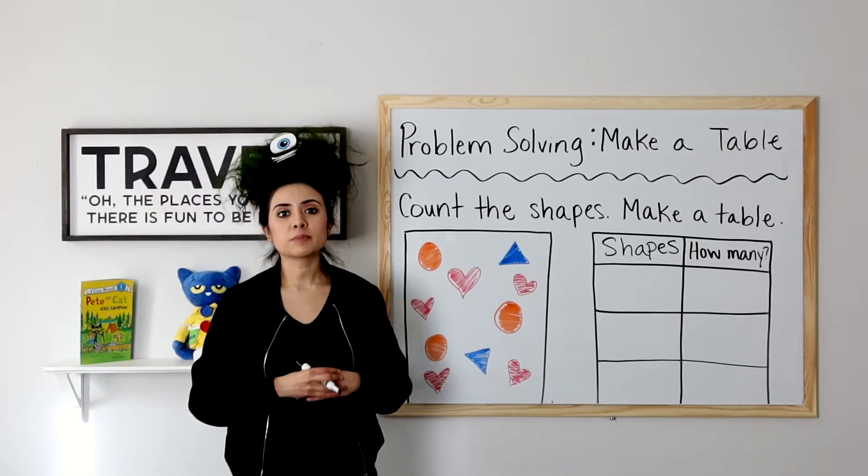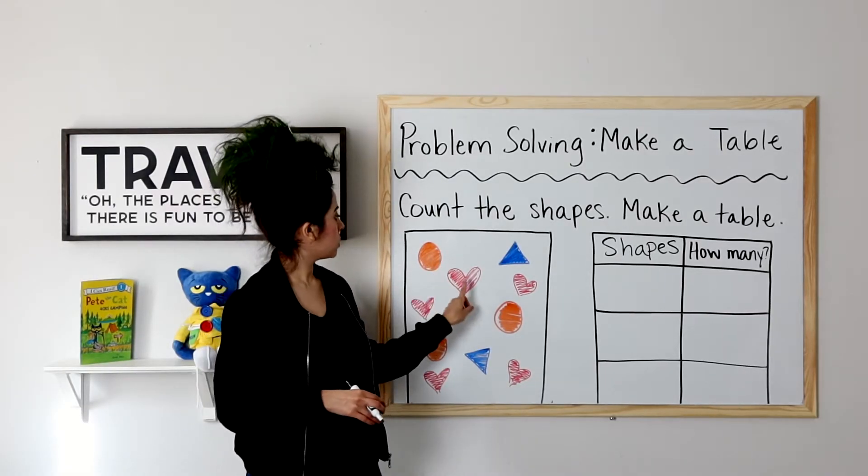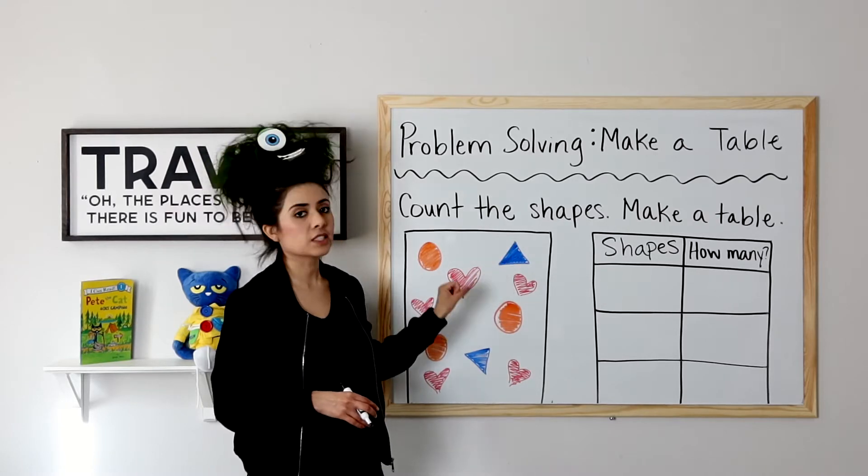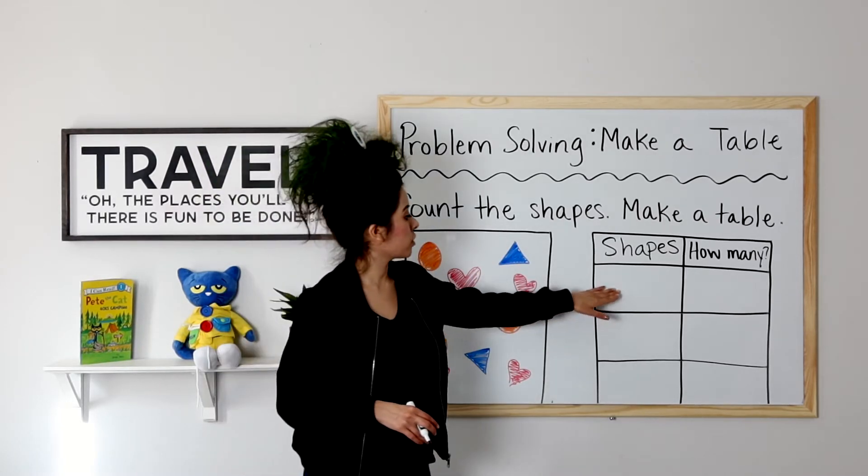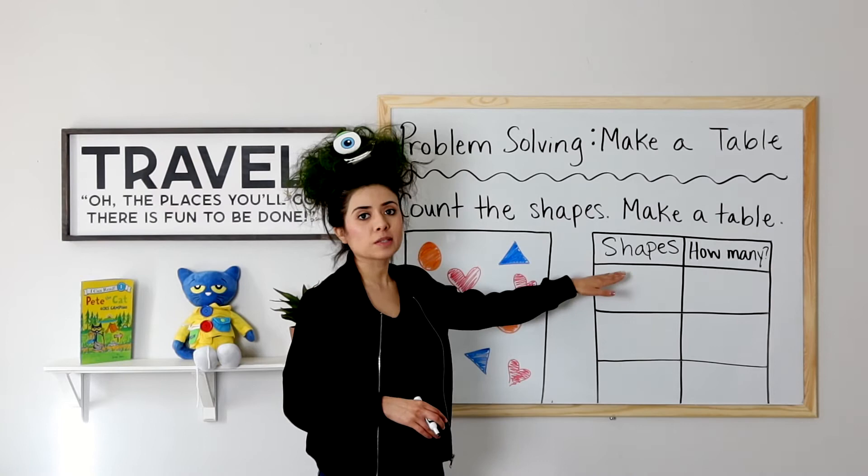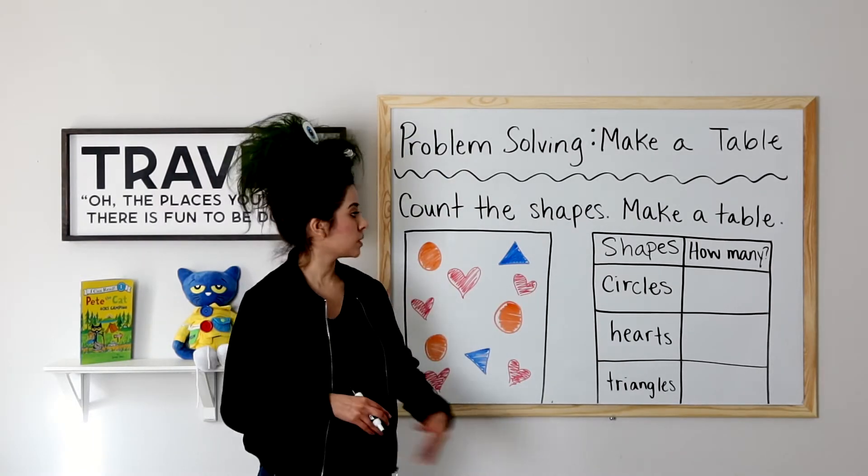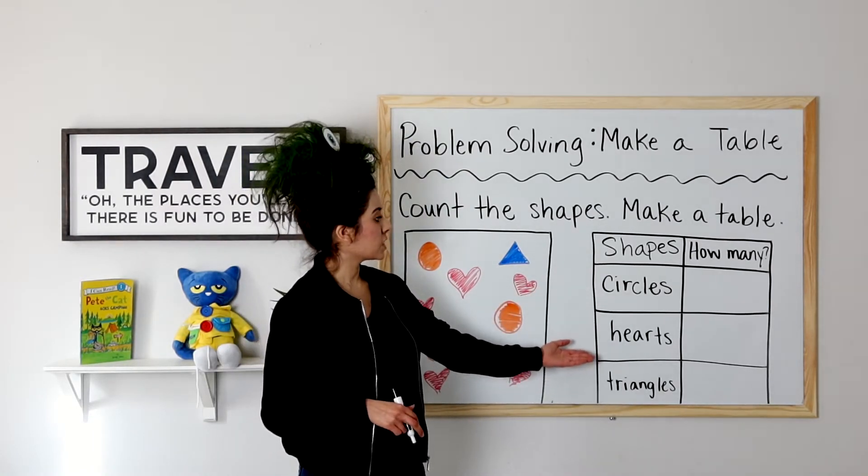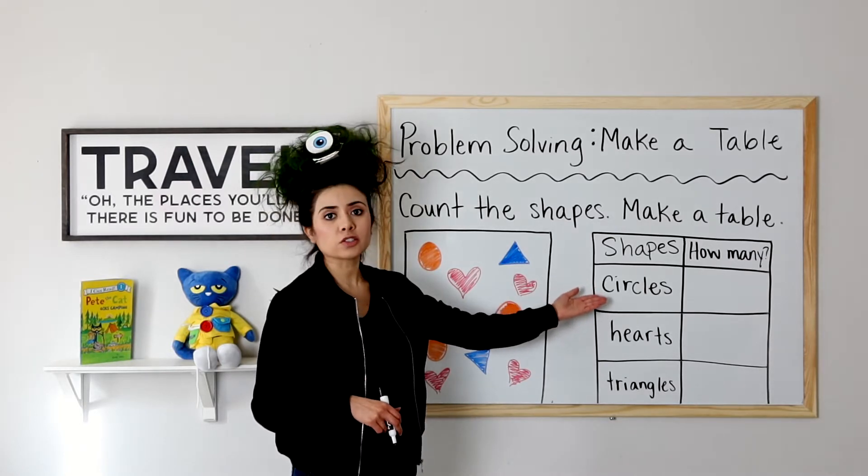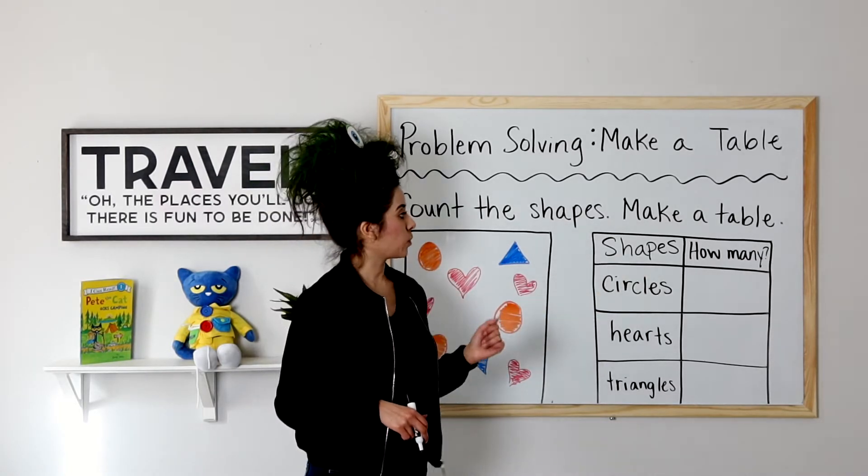Okay, so what three shapes am I working with? I have circles, hearts, and triangles. I will go ahead and label my three shapes in the shapes column. Okay, so I have labeled my circles, hearts, and triangles. Let's go ahead and count our circles to see how many we have.